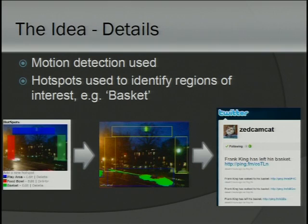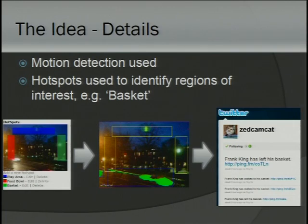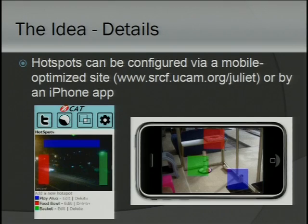The way the image detection works is we have these hotspots, which you define on your image. This is Madingley Road — we didn't have that many cats around to try this out on. The hotspots, which you configure via our interface, get downloaded onto the client, and it looks for motion into and out from these hotspots, which correspond to what ends up on Twitter.